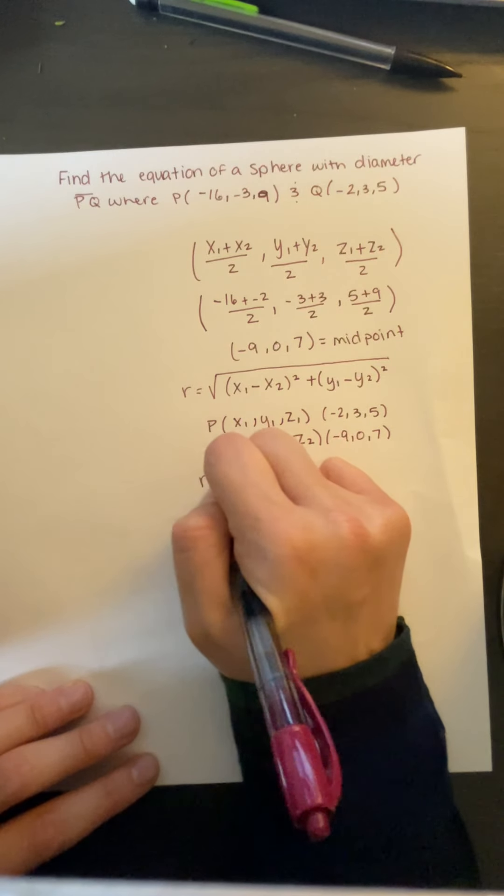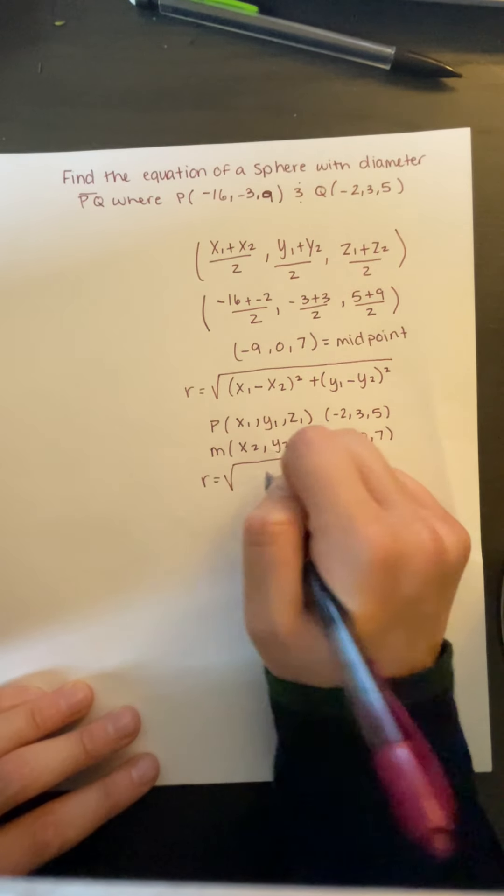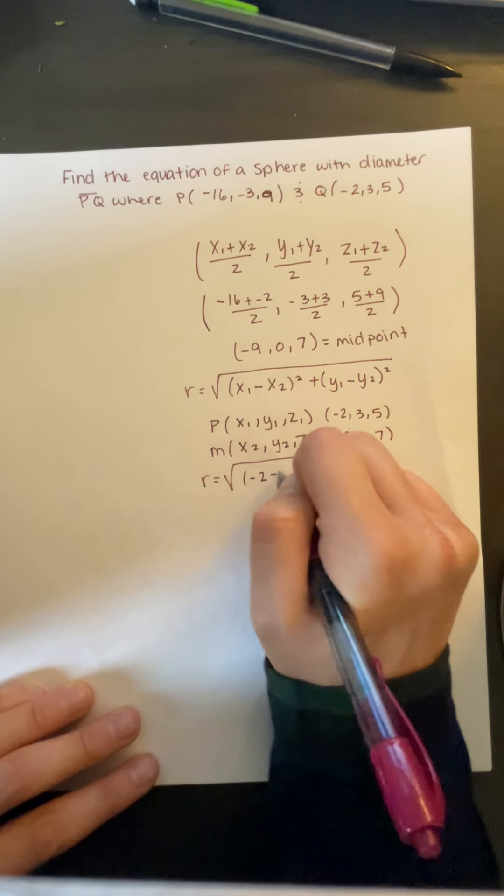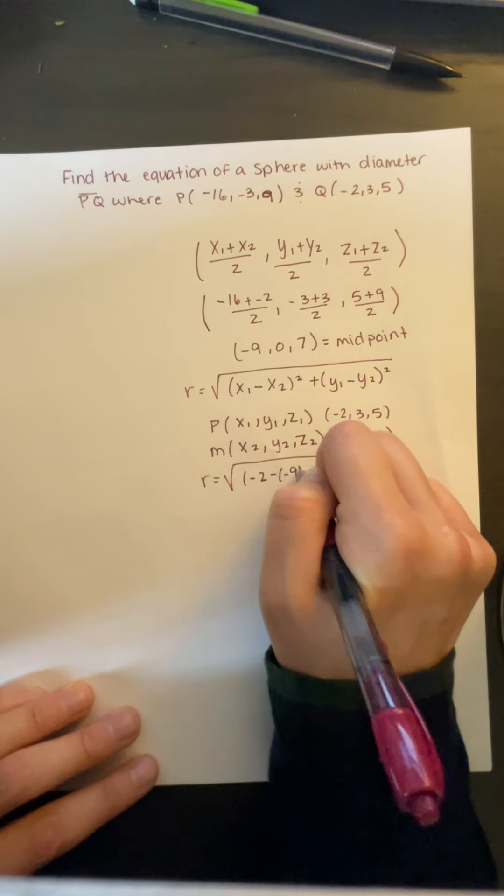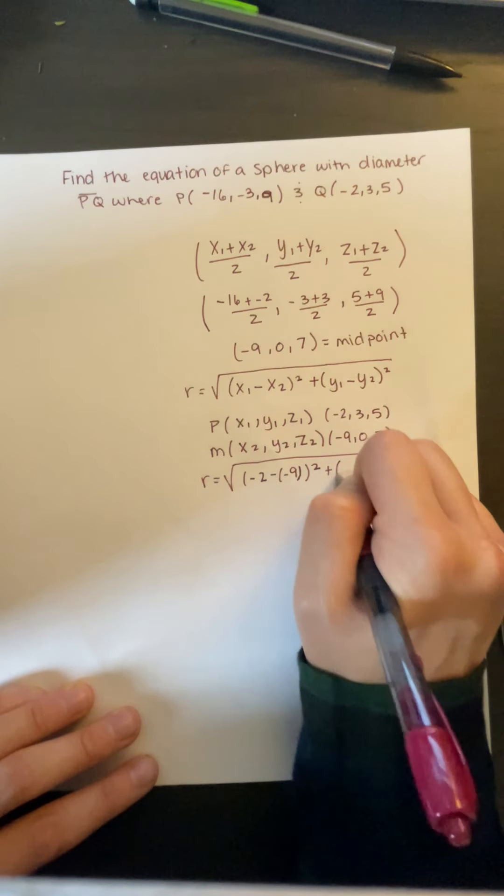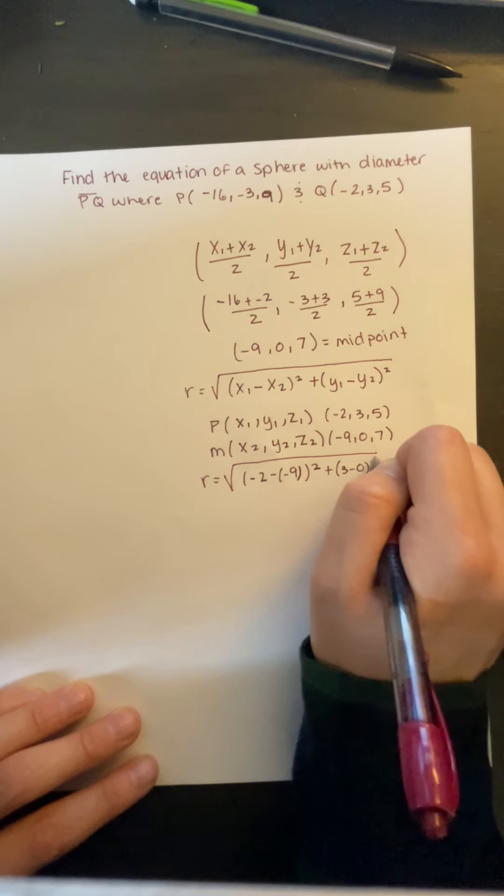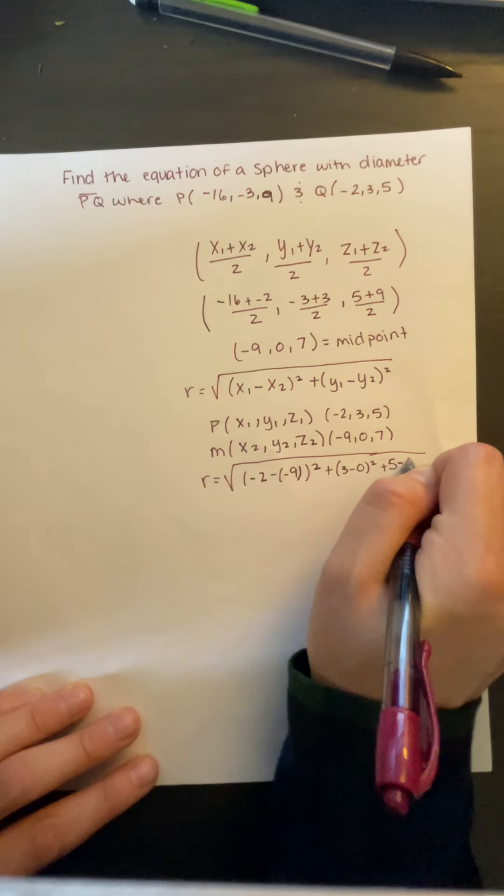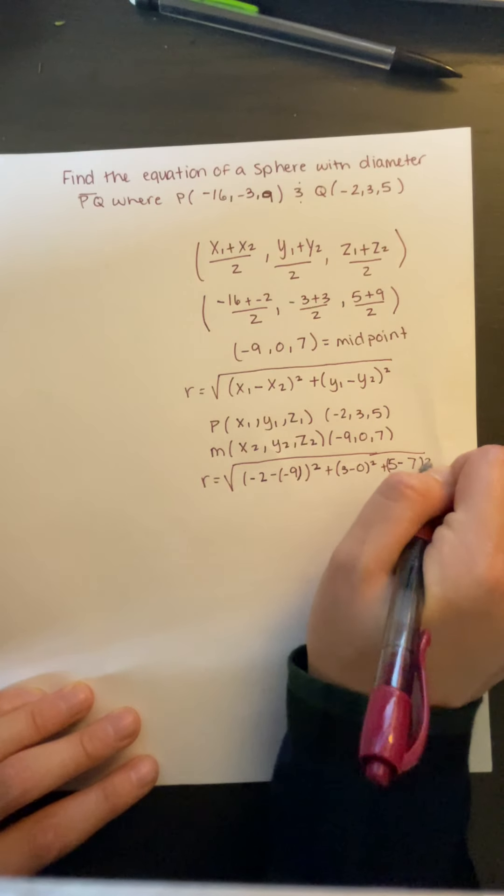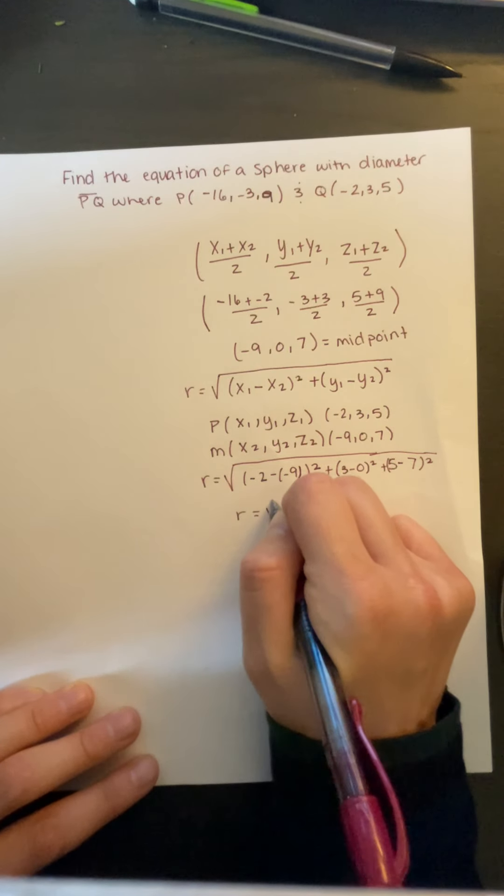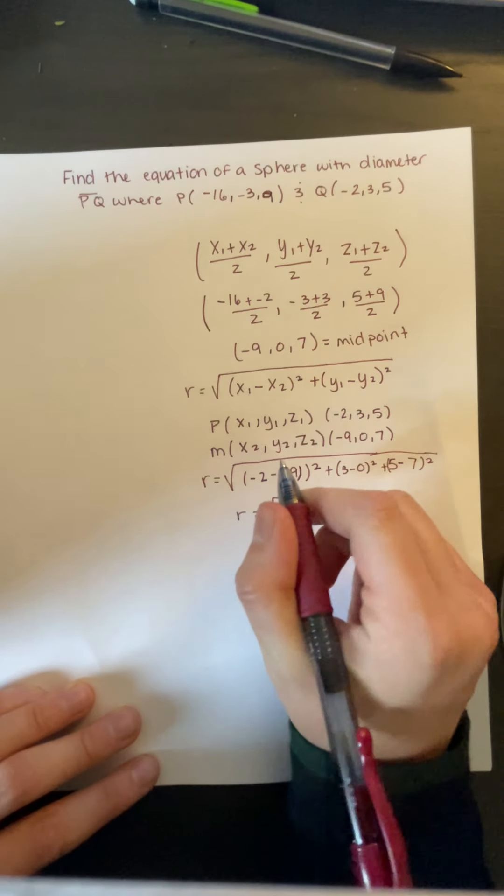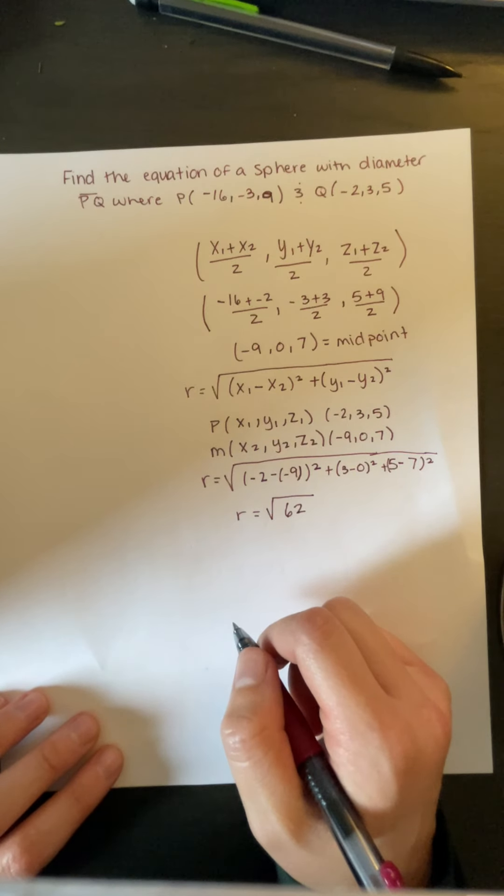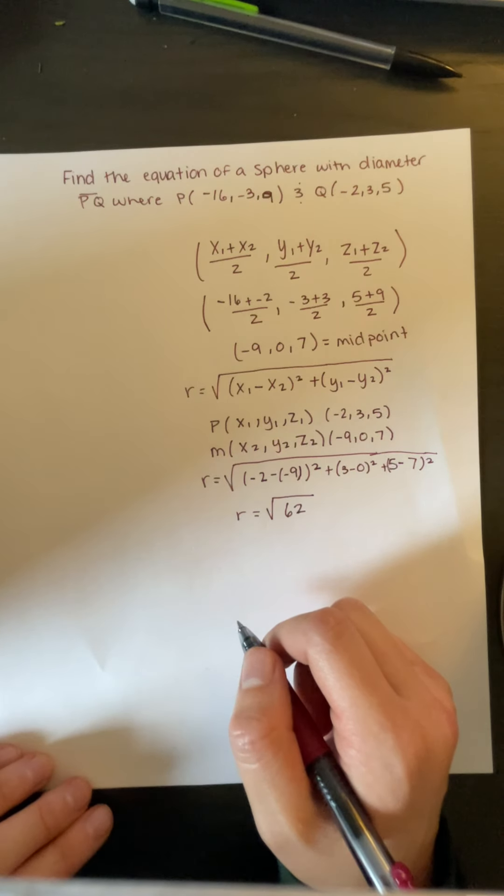So r equals the square root of negative 2 minus negative 9 squared, plus 3 minus 0 squared, plus 9 minus 7 squared. After you put it into your calculator, r equals the square root of 62.